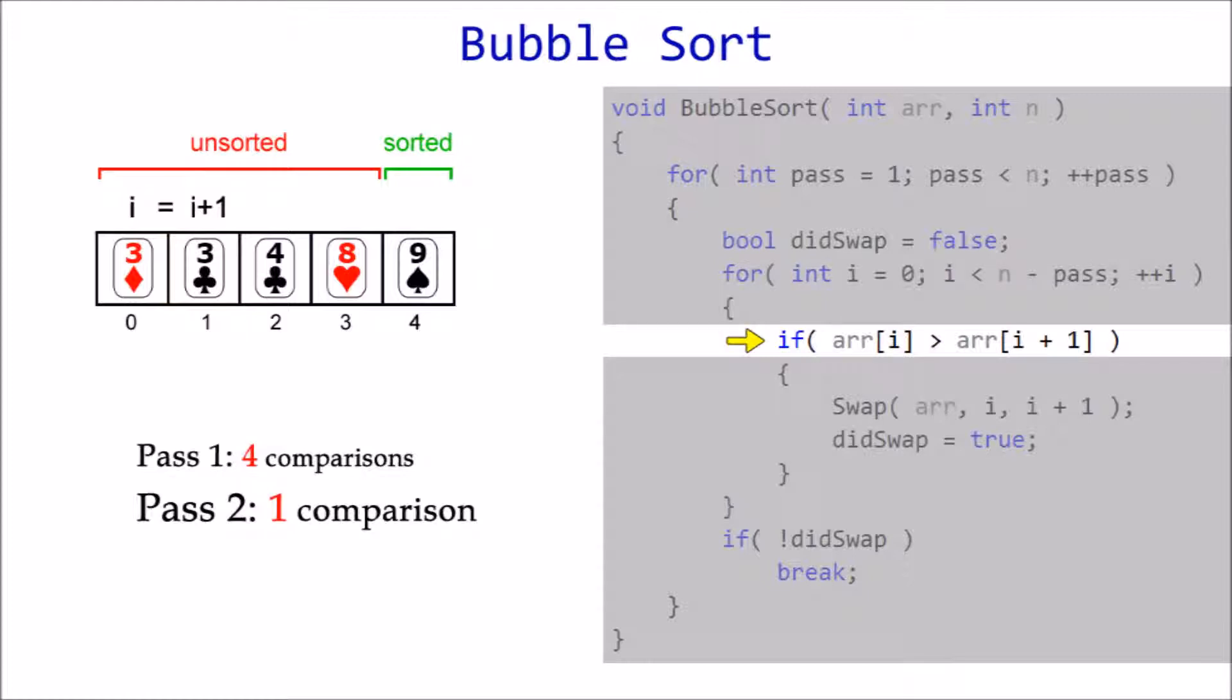Three is not greater than three, so current is incremented to index one. Three is not greater than four, so current is incremented to index two. Once again, four is not greater than eight, and because all unsorted elements have now been compared, we exit the inner loop.